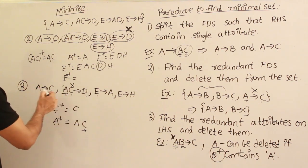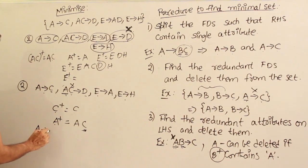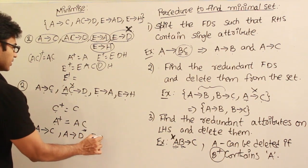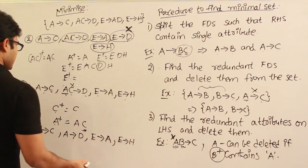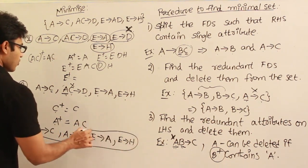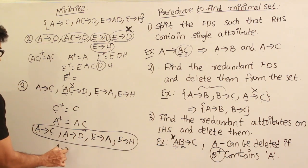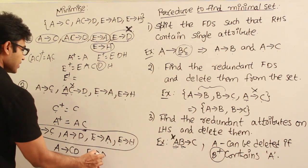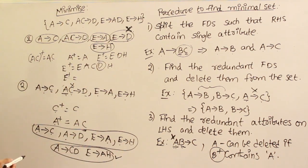C is redundant, so AC→D becomes A→D. The final minimal set is: A→C, A→D, E→A, E→H. If you want, you can merge them: A→C and A→D become A→CD, and E→A and E→H become E→AH. Therefore this is the minimal set — starting from four productions, we got two productions.